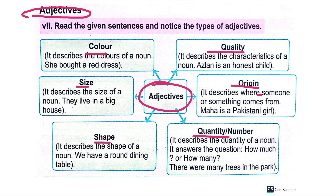Adjective of color: these are used to describe the color of an object. For example, 'she bought a red dress.' Here 'red' is the adjective of color describing the dress.